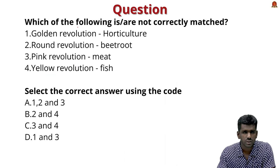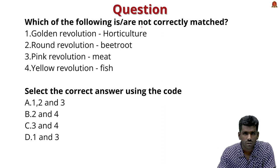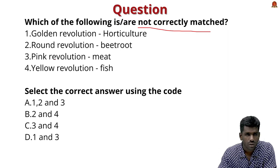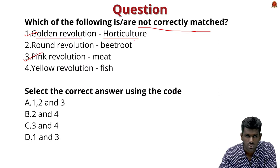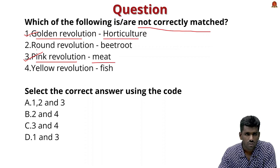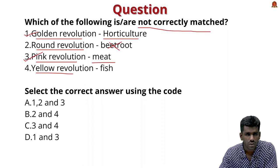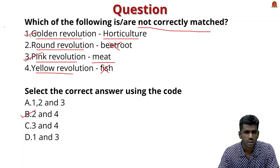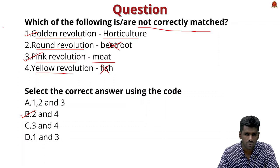An MCQ related to this topic: which of the following are not correctly matched — Golden Revolution: horticulture; Round Revolution: beetroot; Pink Revolution: meat; Yellow Revolution: fish? The first and third are correctly matched. Golden Revolution relates to horticulture and Pink Revolution to meat. Round Revolution relates to potato production, not beetroot — so that is incorrect. Yellow Revolution relates to edible oil seeds, not fish. The correct answer is option B (statements 2 and 4 are incorrectly matched).